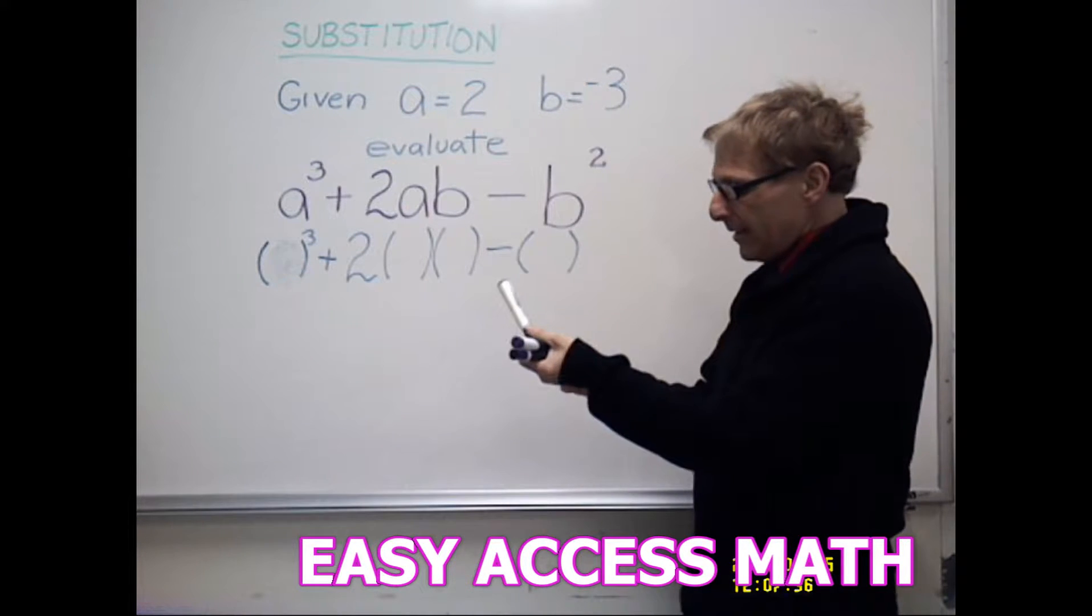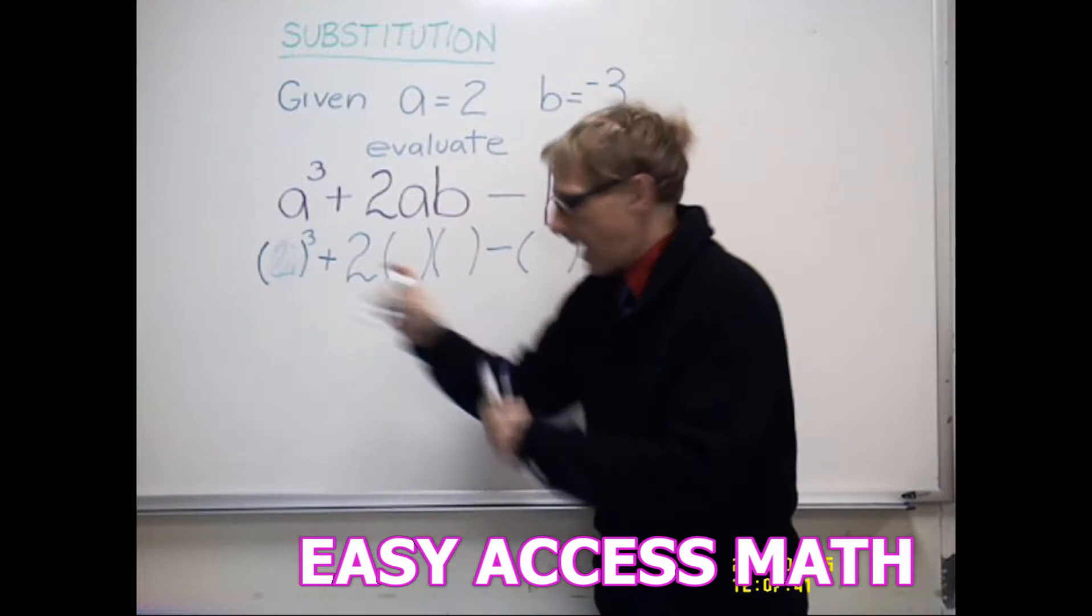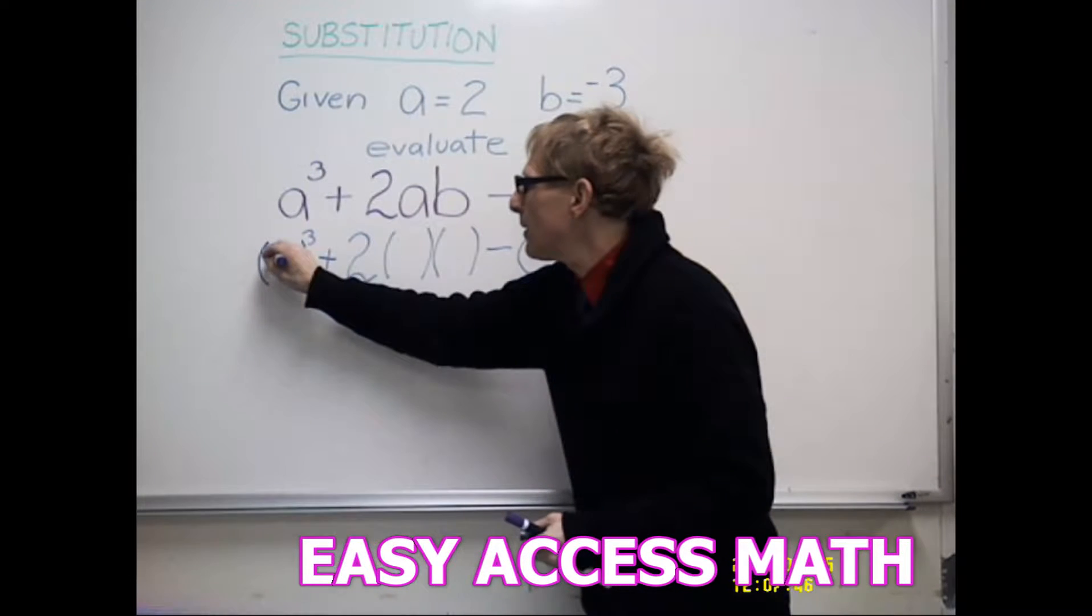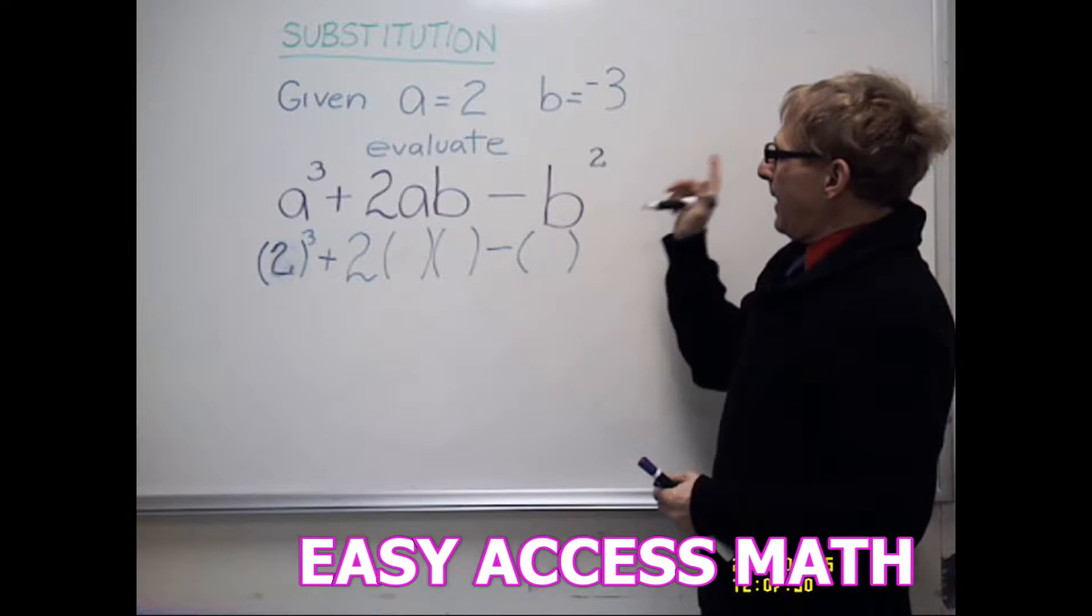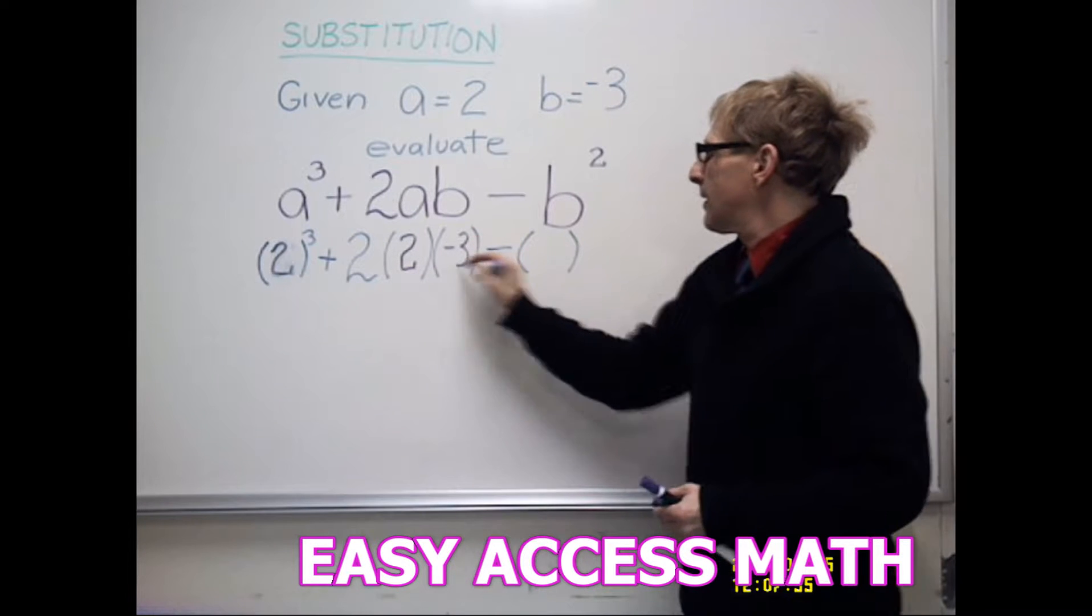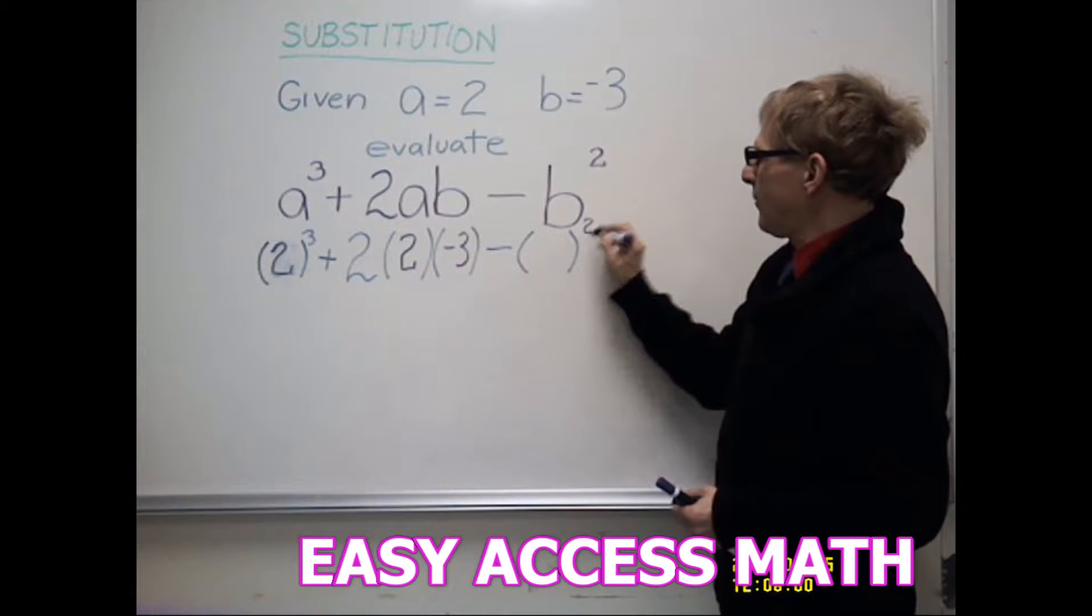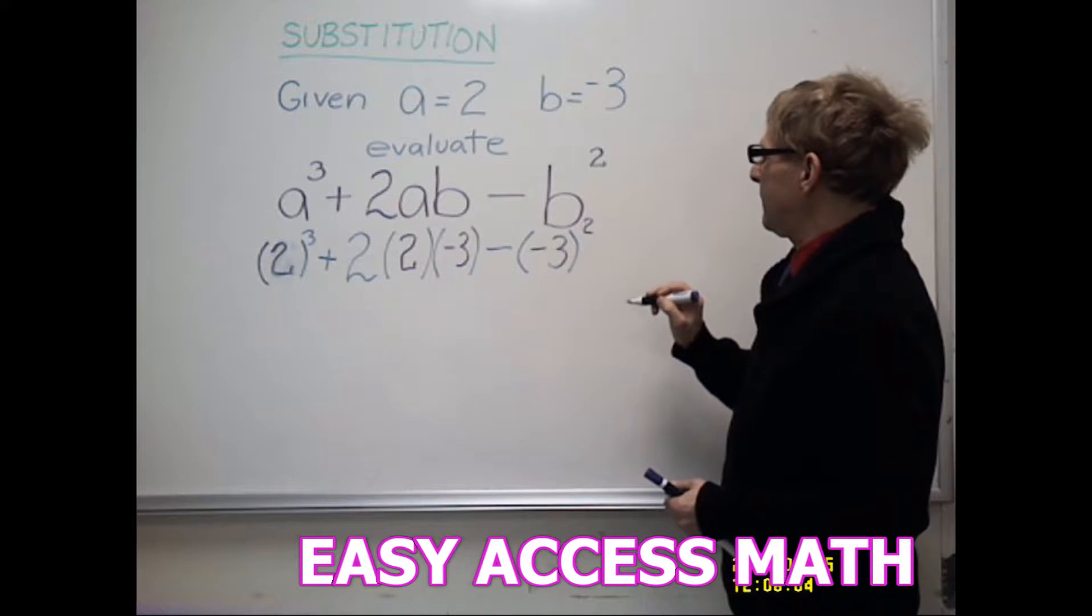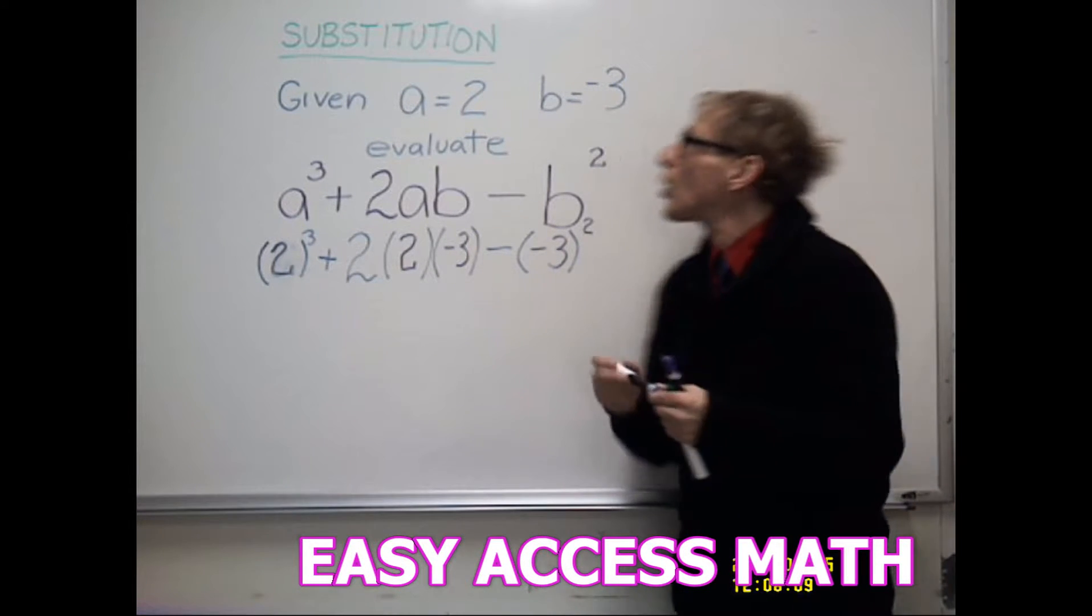So we know that a is 2. Anywhere I see an a, I'm going to put a 2. And we'll get that to be a little darker. There we go. And anywhere we see a b, we'll put negative 3. And let's bring down the square from that and negative 3. And now we will work it out.